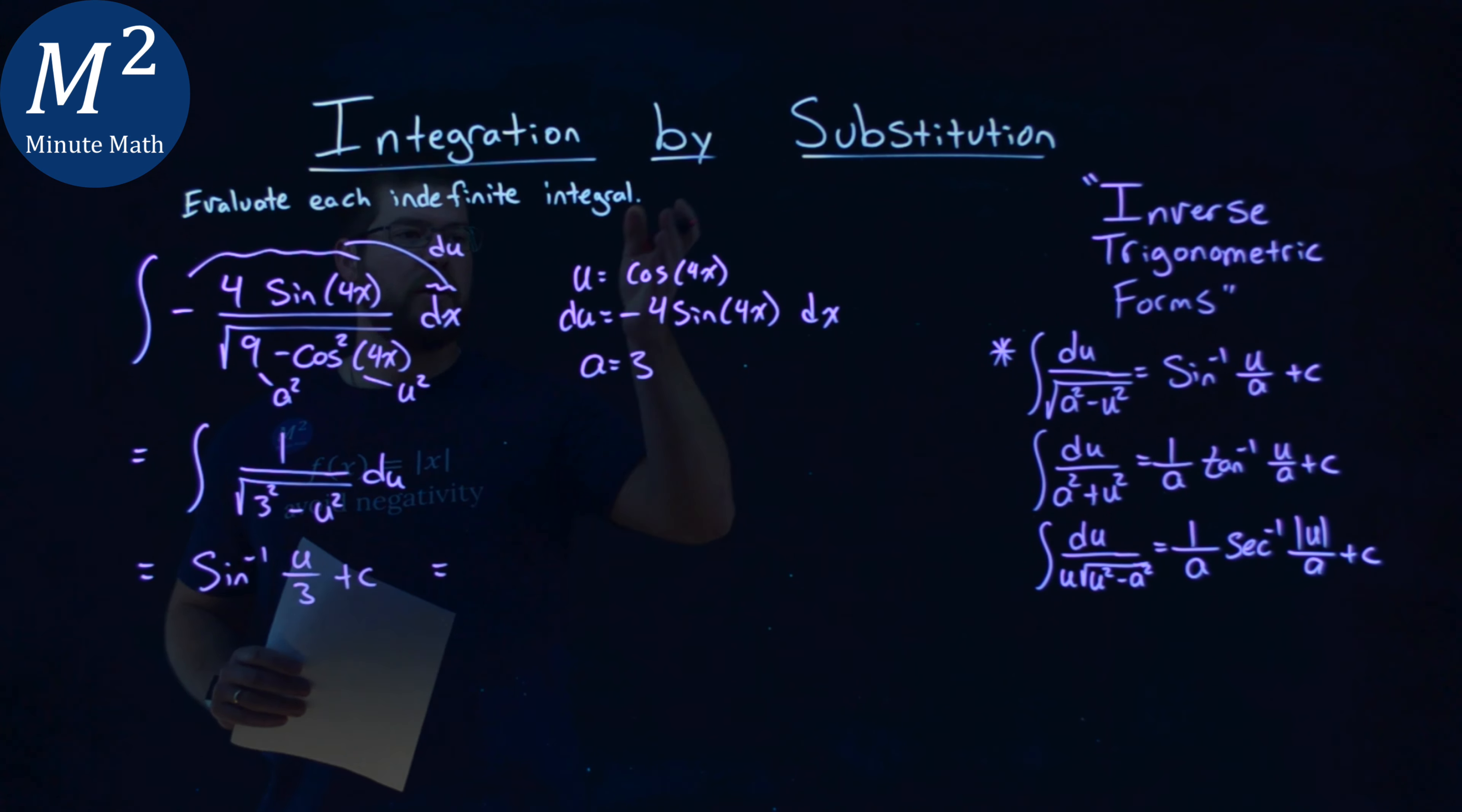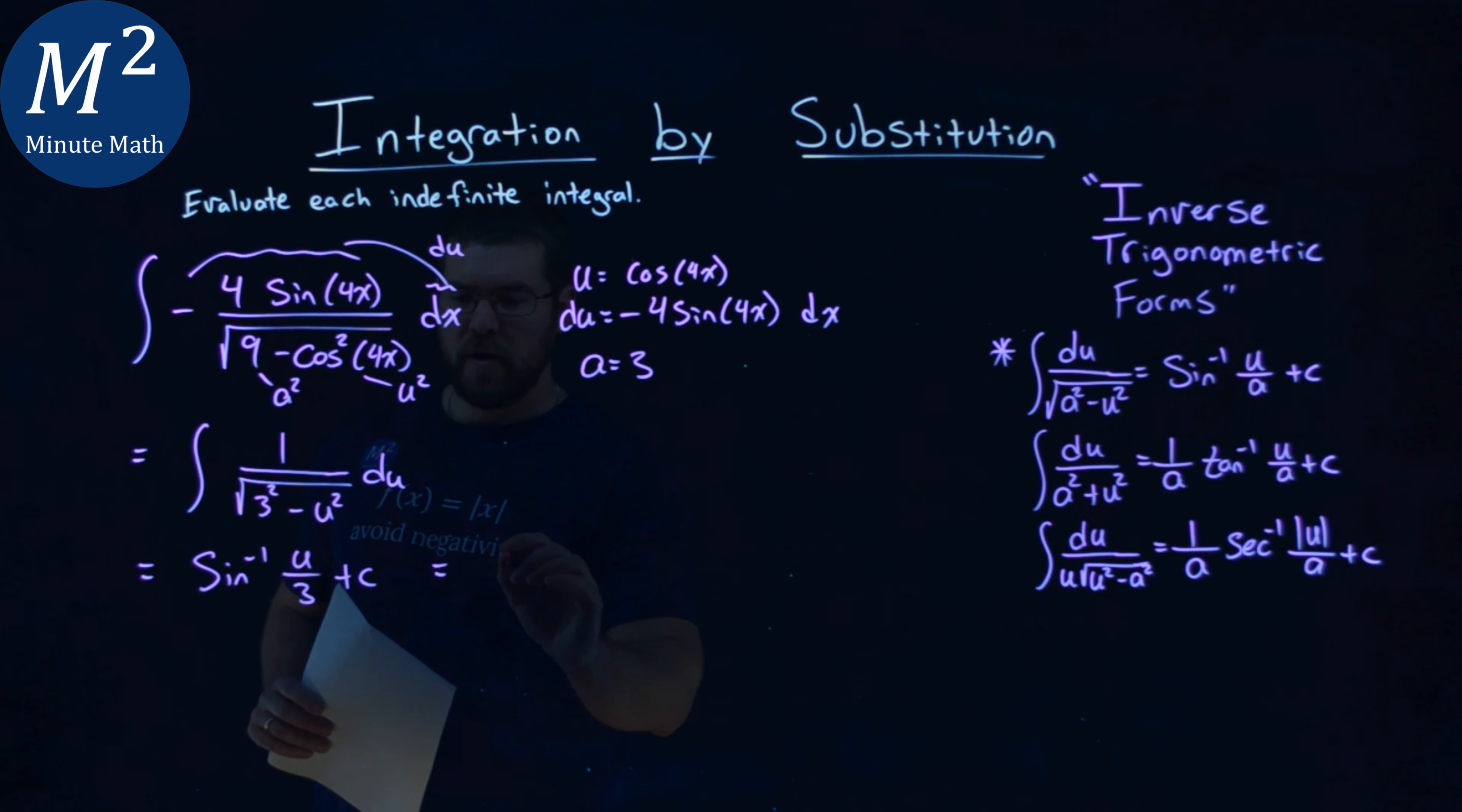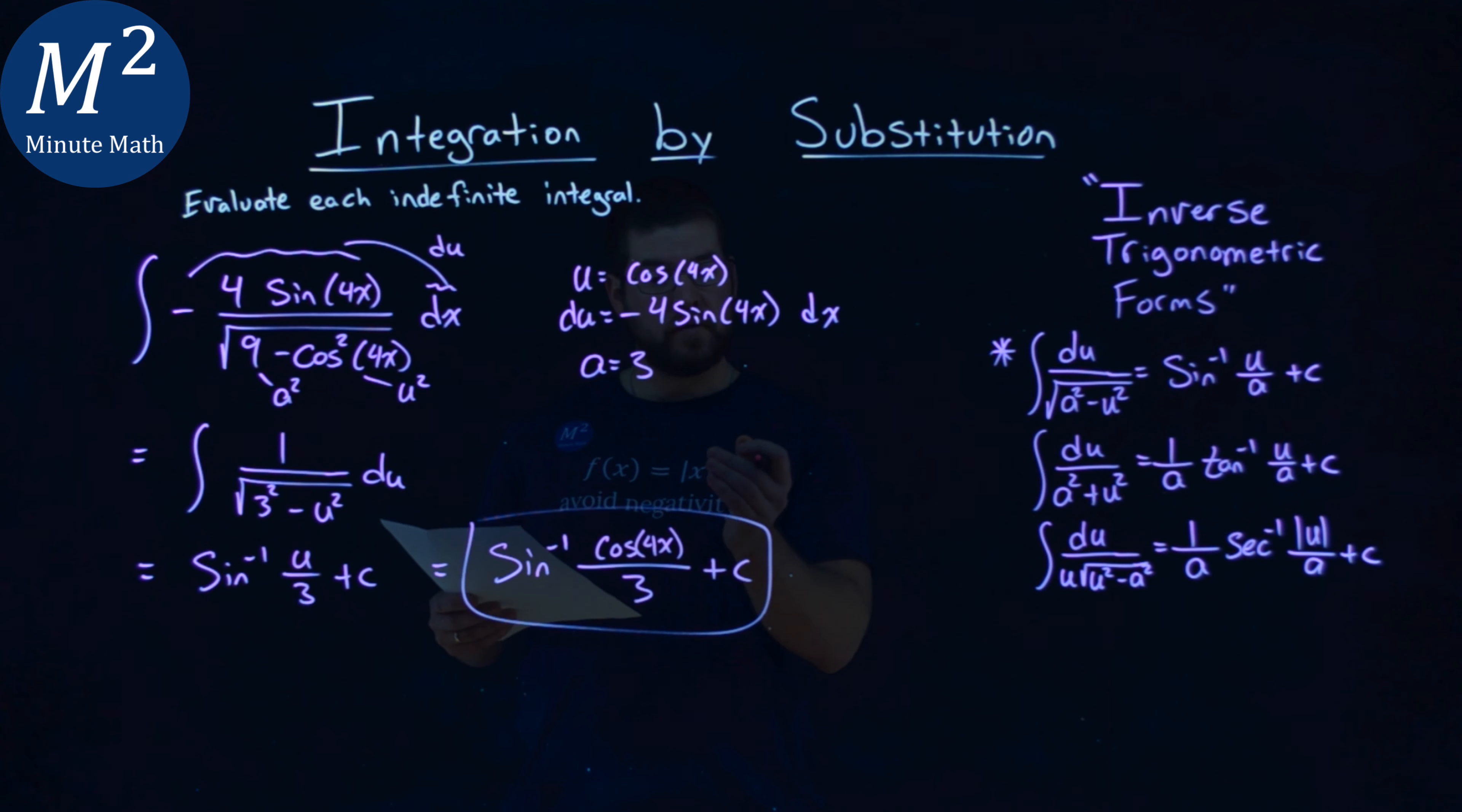Now we can plug cosine of 4x back in for u. So we have the arc sine of my u-value, which is cosine of 4x, over 3, all plus c. My final answer is the arc sine of cosine of 4x over 3, plus c.